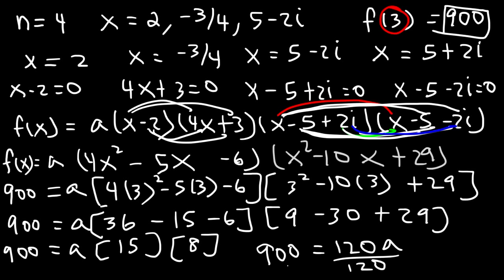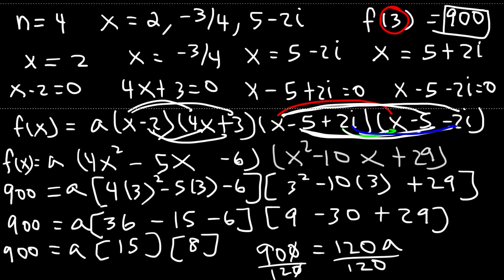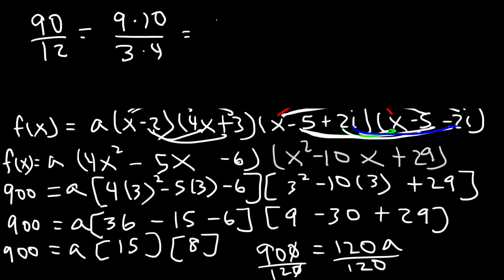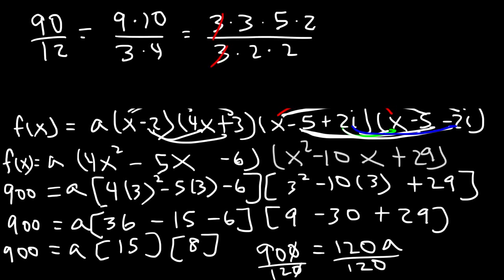So 900 equals 120 times a. Let's divide both sides by 120. We can cancel a zero, so it becomes 90 over 12. Reducing: 90 is 9 times 10, and 12 is 3 times 4. 9 is 3 times 3, 10 is 5 times 2, and 4 is 2 times 2. Canceling a 3 and a 2, we get 3 times 5 over 1 times 2, which is 15 over 2. So a equals 15 over 2.